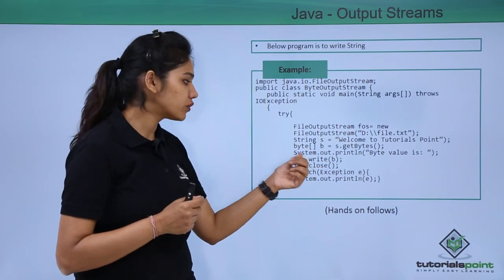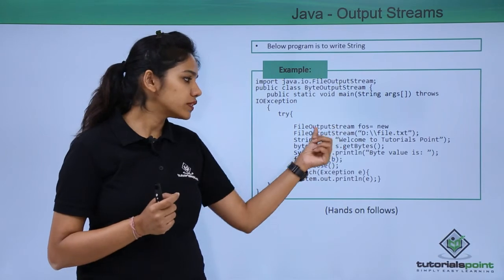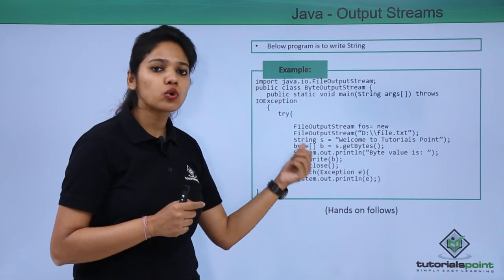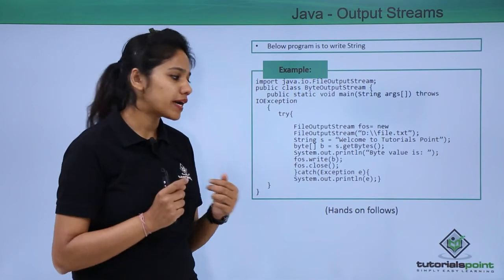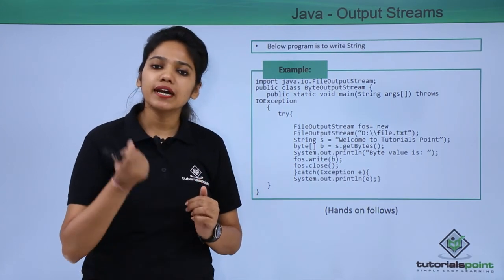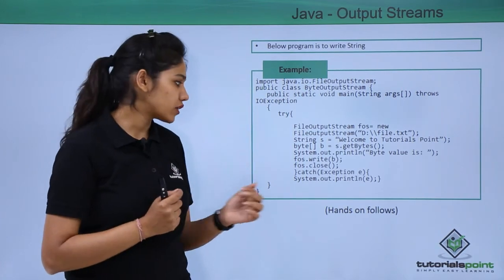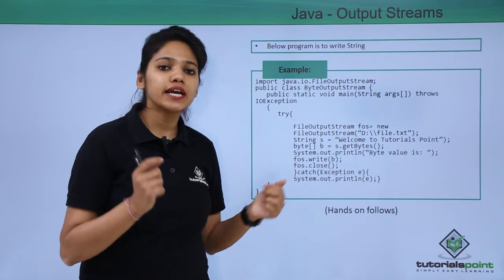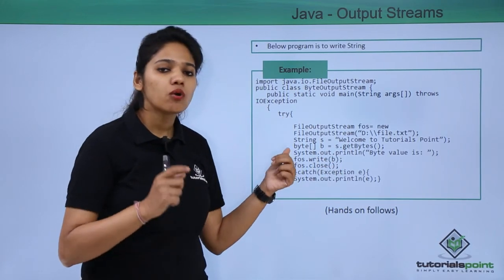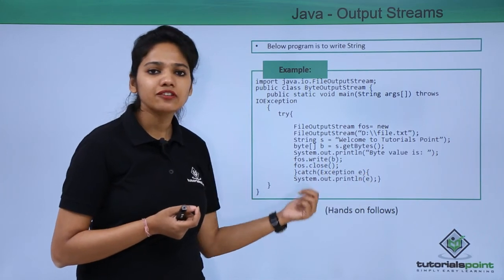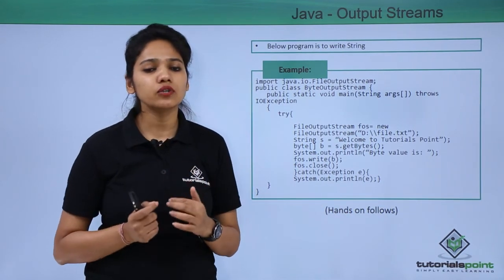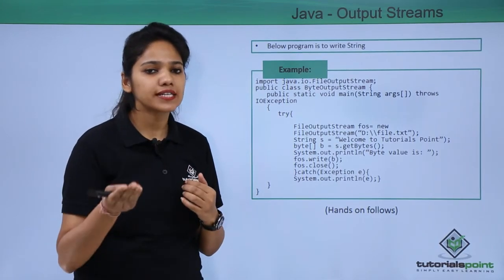Then you write fos.write(b), where b is your byte array holding all the string bytes, and the data will be written to your destination file. After completing the process, it is always recommended to close the connection using fos.close to avoid resource leakage. Then write a catch block to handle any exception that may occur.